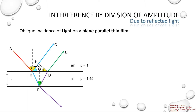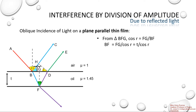Now let us look into the mathematics of this figure — you can pause the video and draw this diagram neatly. From triangle BFG, cos R is given as adjacent side by hypotenuse, that is FG divided by BF. So BF is rewritten as FG by cos R. Here FG is the thickness of the oil film, hence we write T divided by cos R. Now BF plus FD equals 2 times BF itself, hence we can write 2T by cos R.